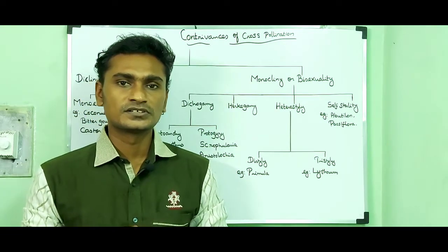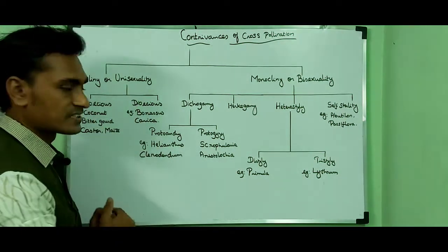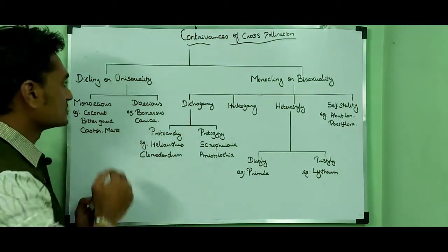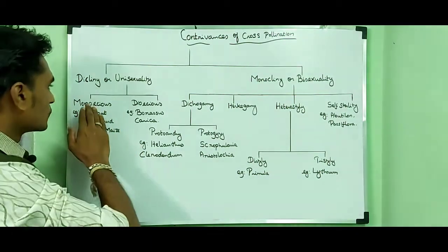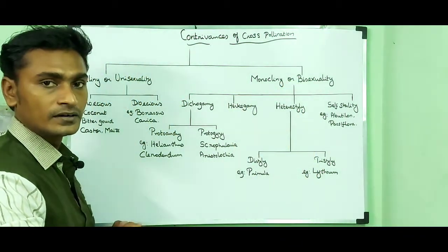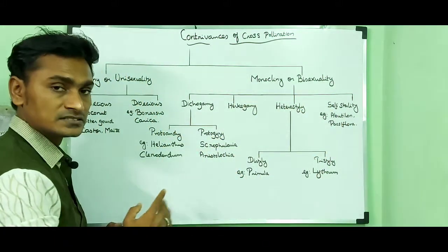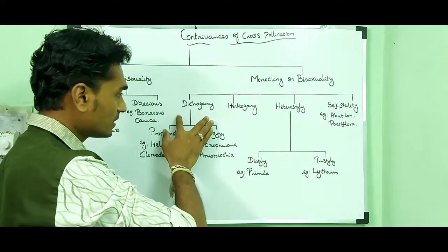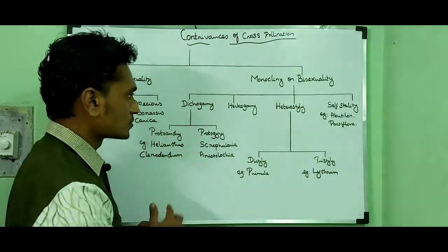It includes the following types: Dicliny or unisexuality, and Monocliny or bisexuality. In the case of Dicliny or unisexuality, it can be classified into two types: Monoecious and Dioecious. In the case of Monocliny or bisexuality, it can be classified into four types: Dichogamy, Herkogamy, Heterostyly, and Self-sterility. Dichogamy is further classified into two types: Protandry and Protogyny.